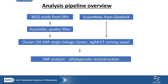I'm not going to go into a lot of detail on the analysis pipeline — we're making changes to it and publications will come out describing it. The basic idea is data from the surveillance network goes into SRA, we assemble it and do quality filtering, and we pull in assemblies from GenBank for the same organism. We cluster those together using single linkage clustering, currently with a 50 SNP max breakpoint. We will be switching to whole genome multi-locus sequence typing probably in April. Within each cluster, we do a phylogenetic reconstruction and make that data available.